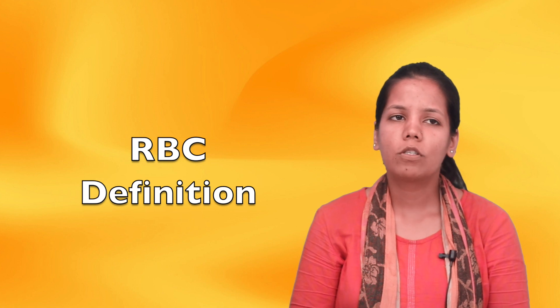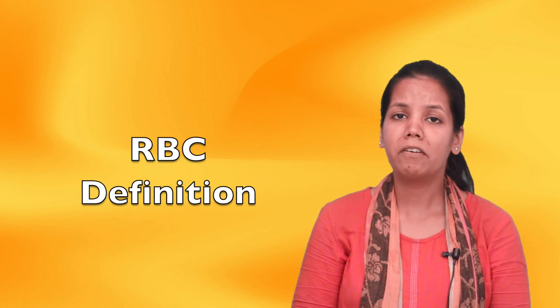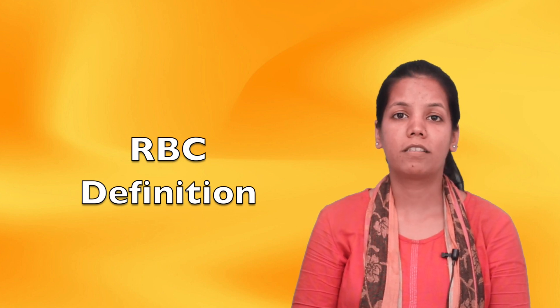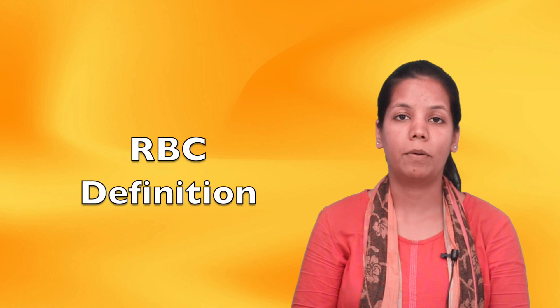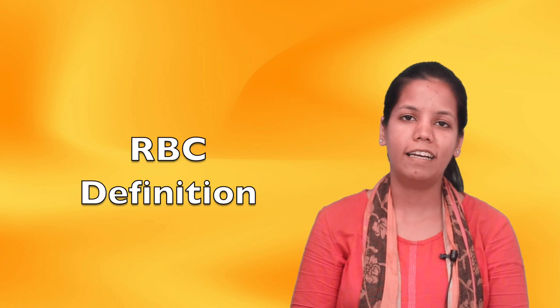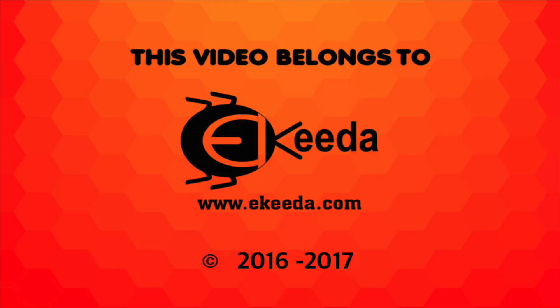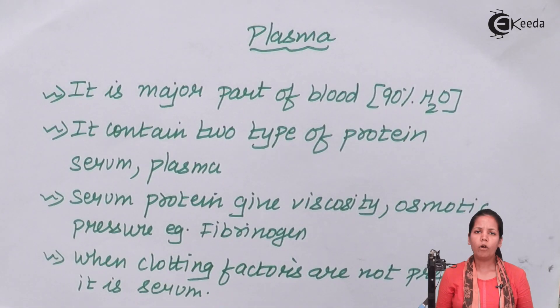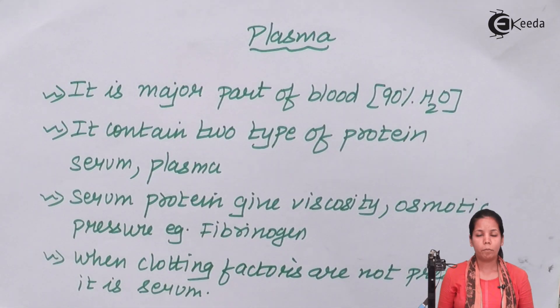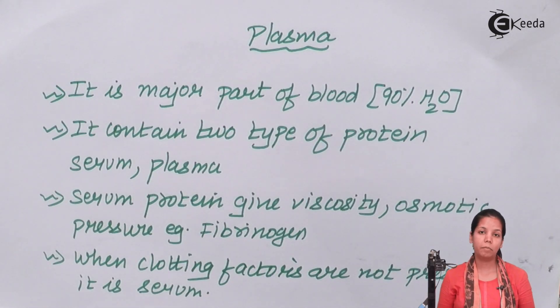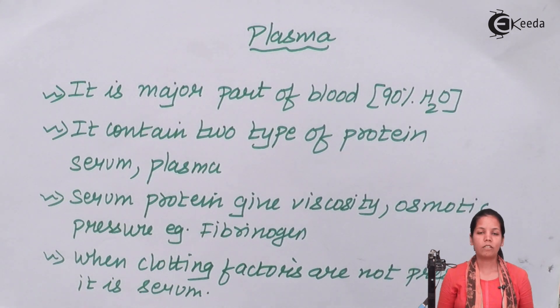Plasma accounts for approximately 50 to 60 percent of your blood — that's how important plasma is. If you observe the blood composition, at least 50 to 55 percent, approximately 60 percent, is plasma.